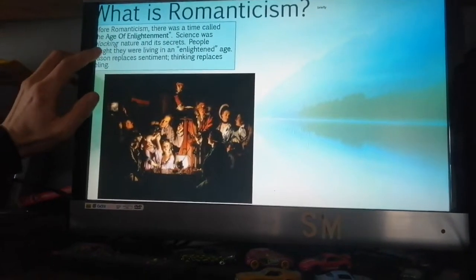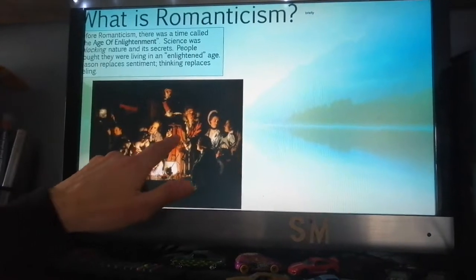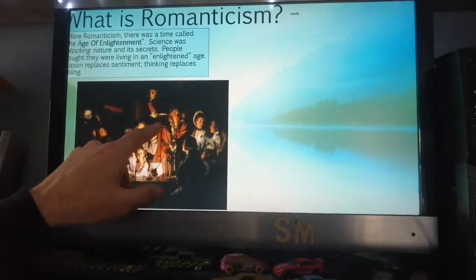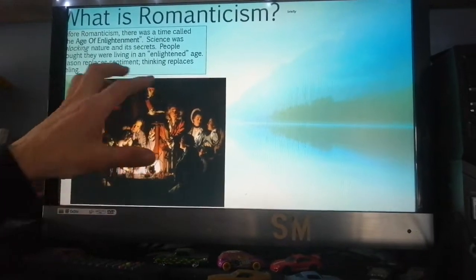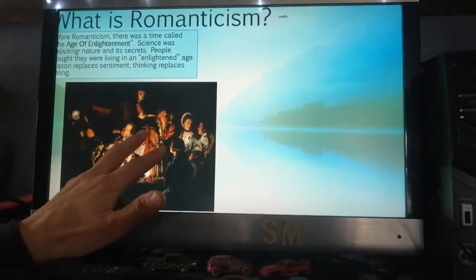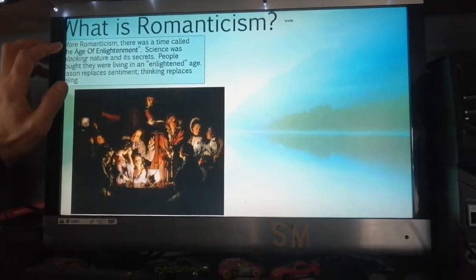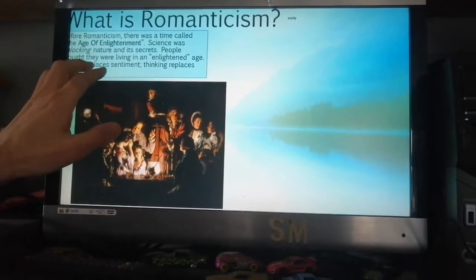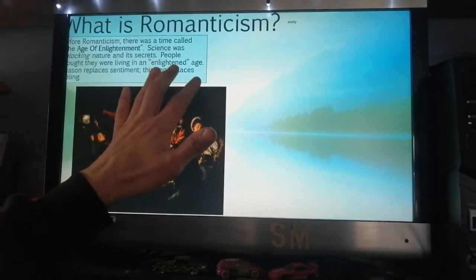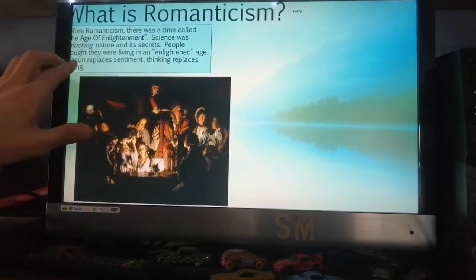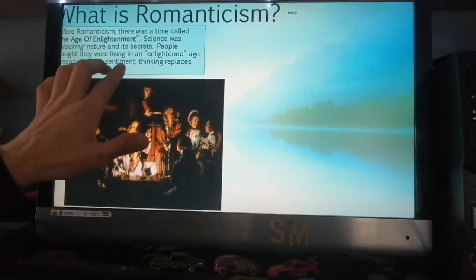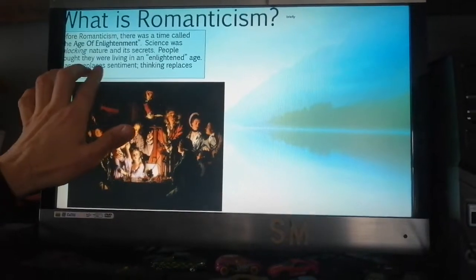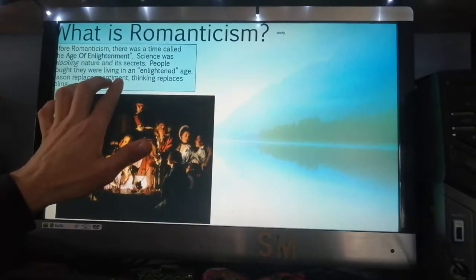Science was unlocking nature and its secrets — for instance, there's a Joseph Wright of Derby painting where you can see air being pumped out of a jar so that you can observe a bird suffering, which gave an understanding of what oxygen was. This led people to believe they lived in an enlightened age — that's why we call it the Age of Enlightenment. Reason replaced sentiment: intellect and thinking replaced emotions and the heart. Thinking replaced feeling, very crudely put.